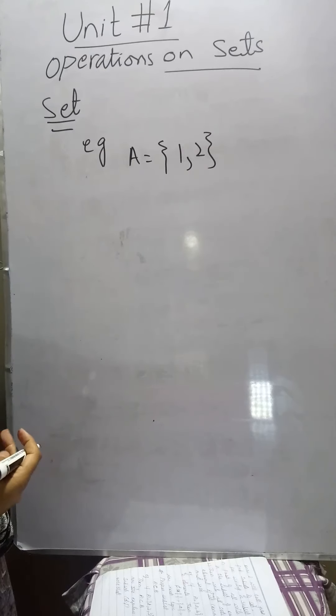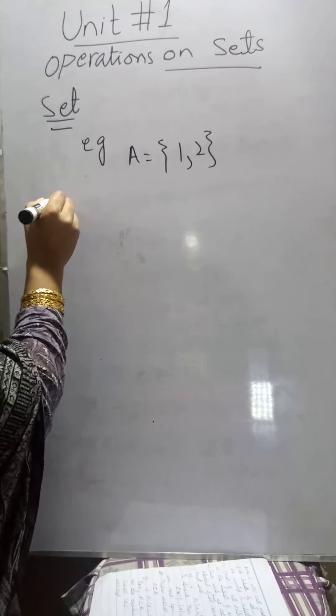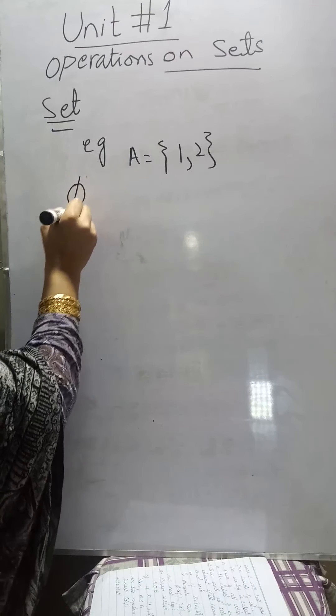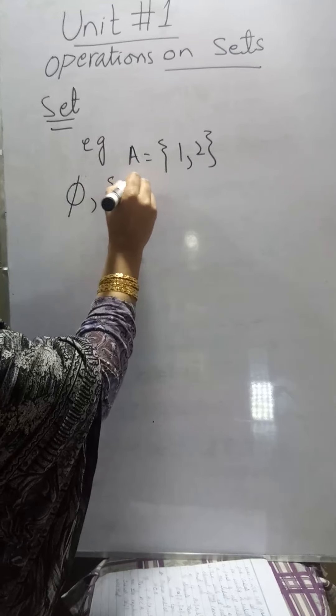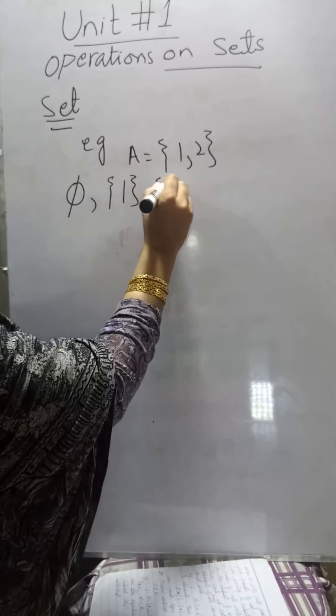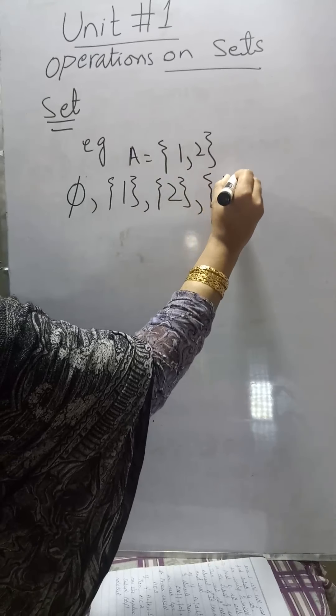This set contains two elements. Then we write the subsets of the set A as: empty set, the set containing one element only, the set containing the elements one and two.